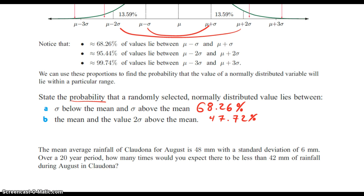Less than 42. So we may want to draw the curve. Here's 48, and then standard deviation of 6, so that means it's going to be 42 and 54. We want it to be less than 42, so this area is what we're looking for. It's the probability that it's going to be in that area.